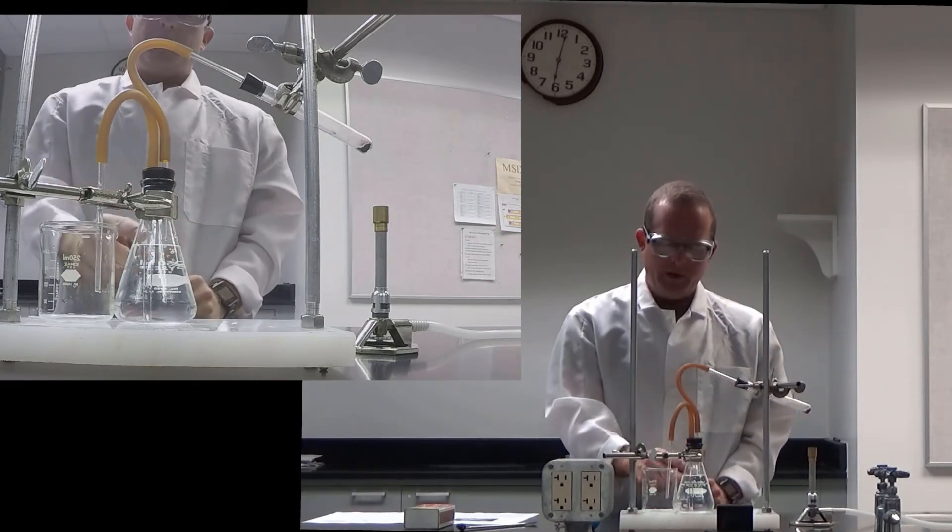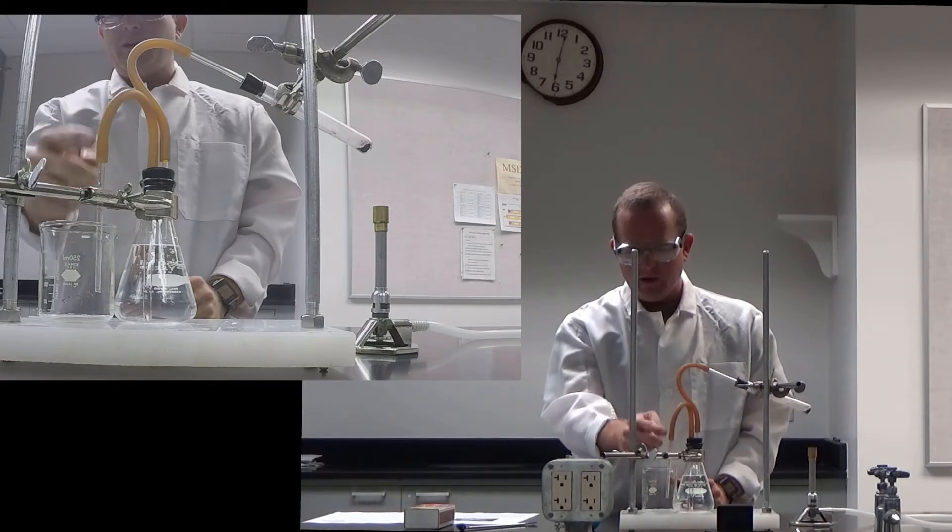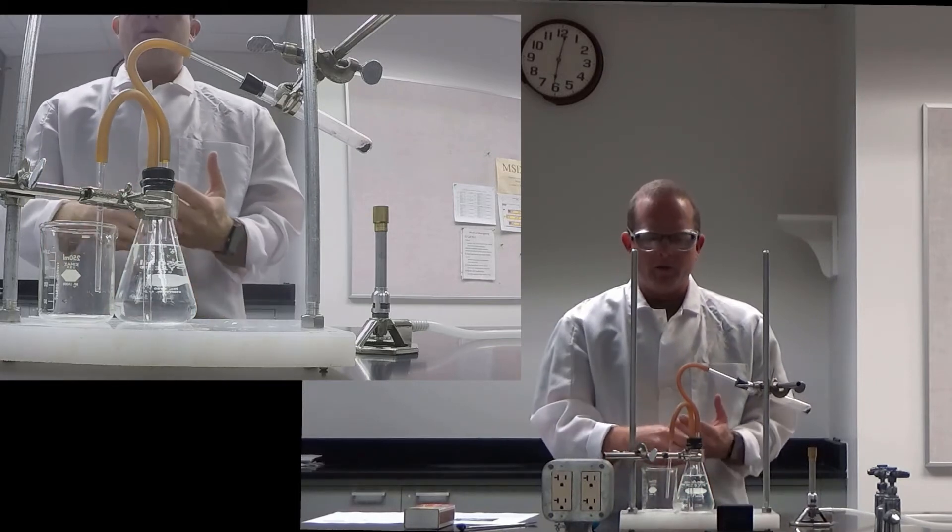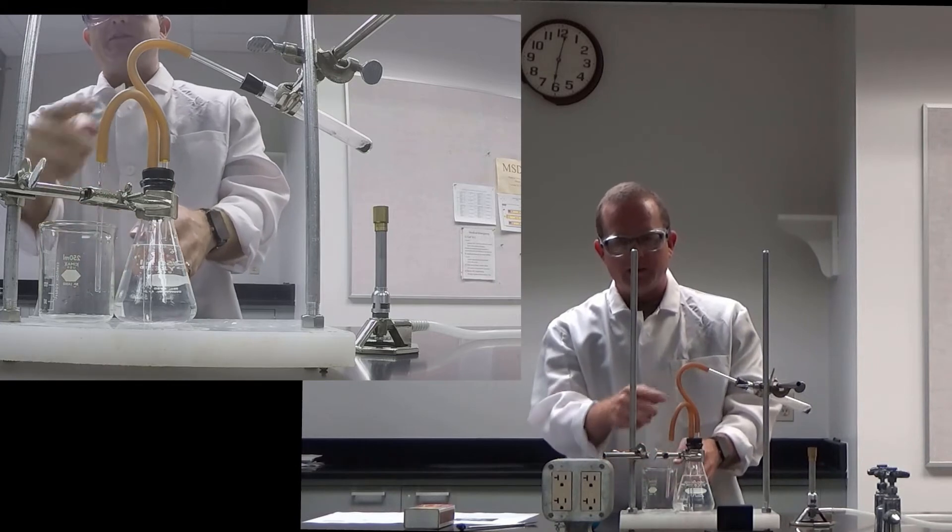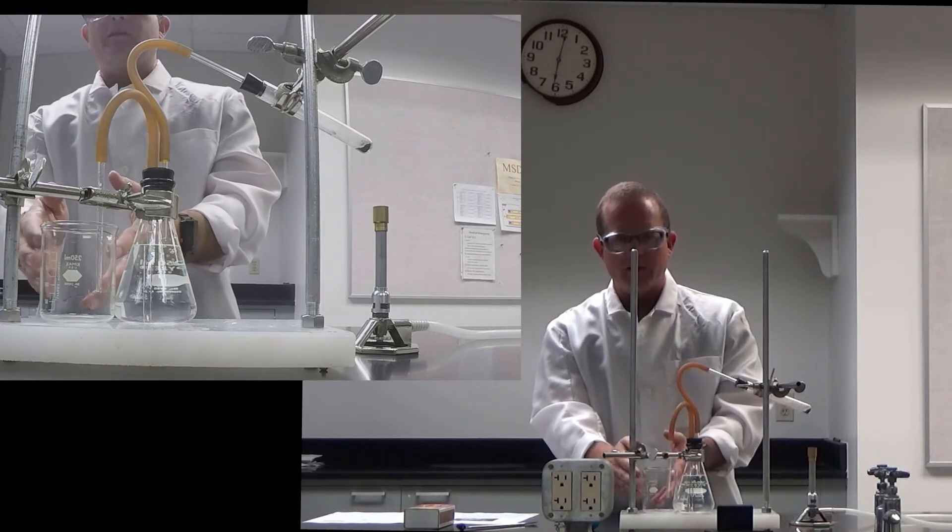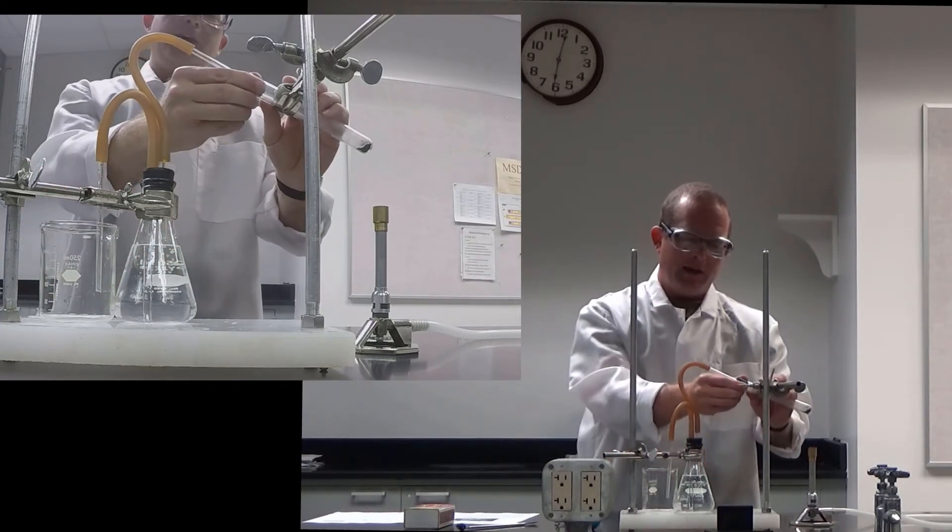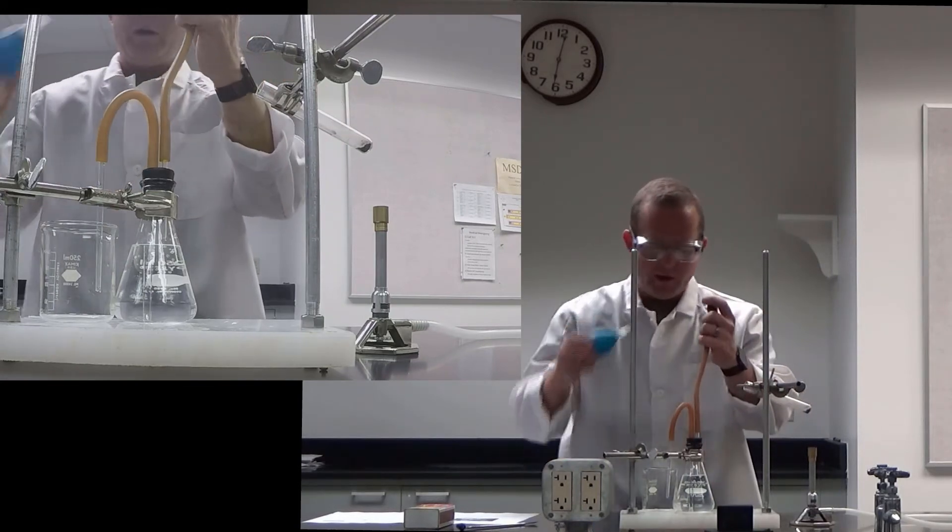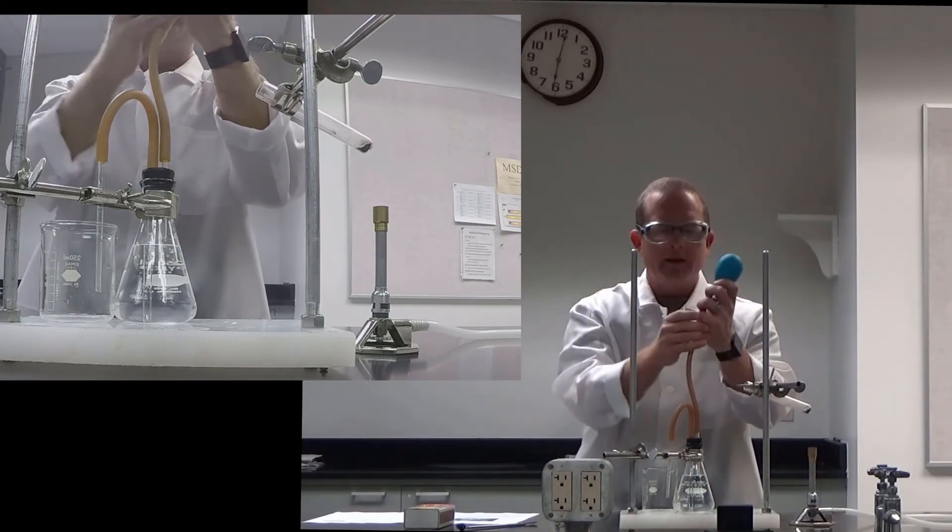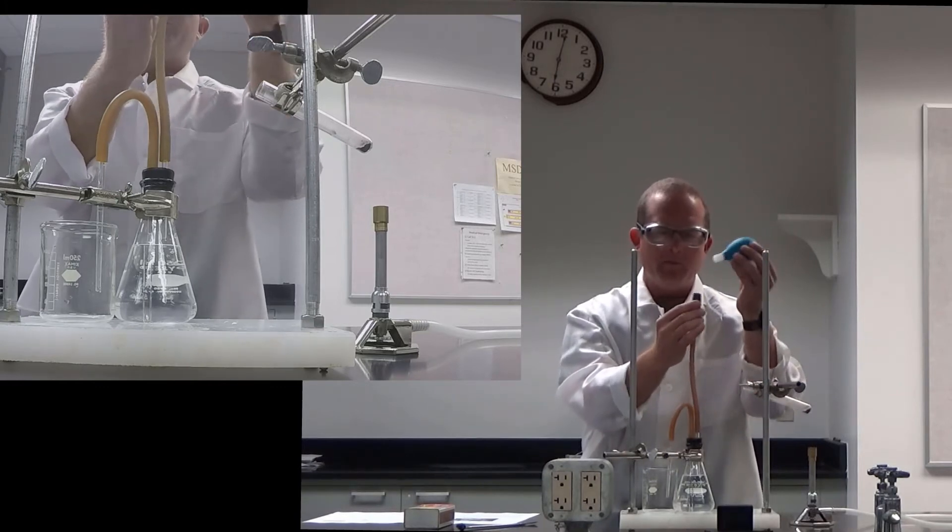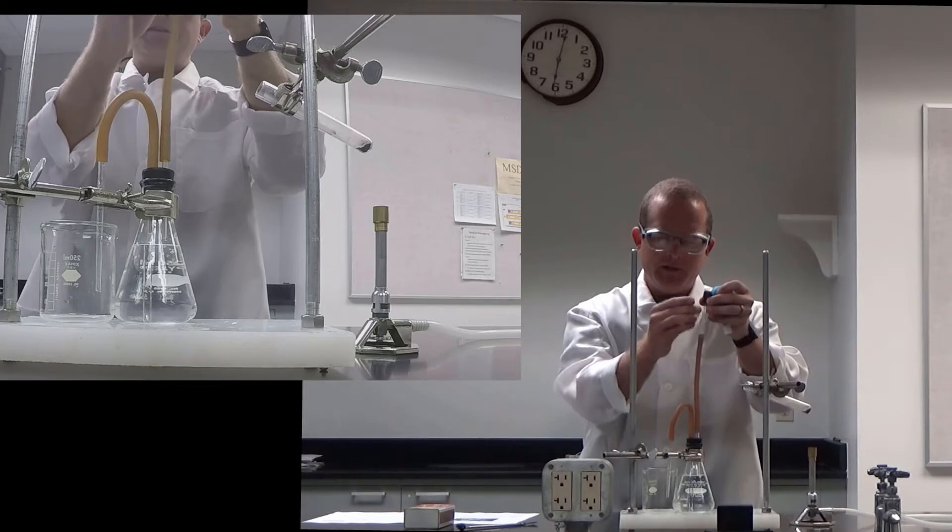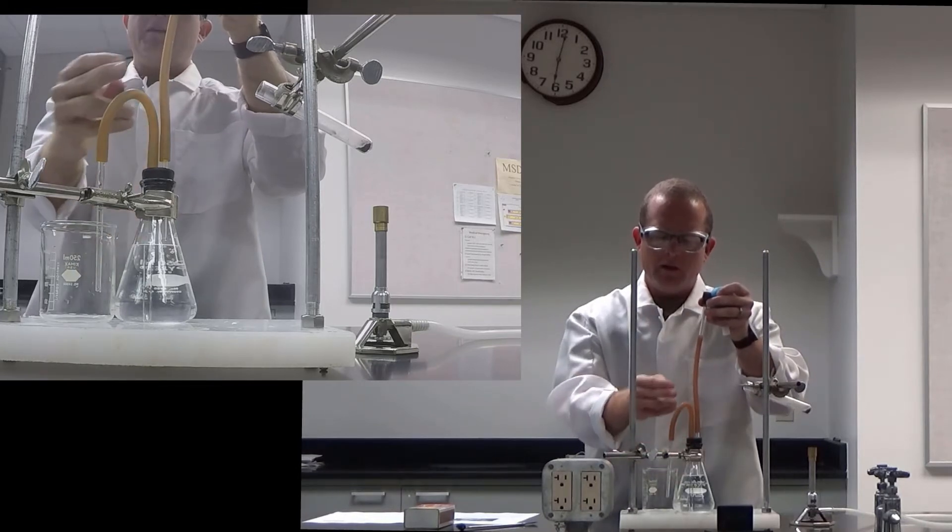But before we start with this, we need to make sure that this tube here is full of water so that we don't account for the air that's in that tube when we're measuring the mass of the water at the end. So to do that, we need to charge that tube with water. So this can be kind of tricky. You can use a partner when you do this, but you want to take a pipette bulb and you want to push air into this tube and force water into this tube.